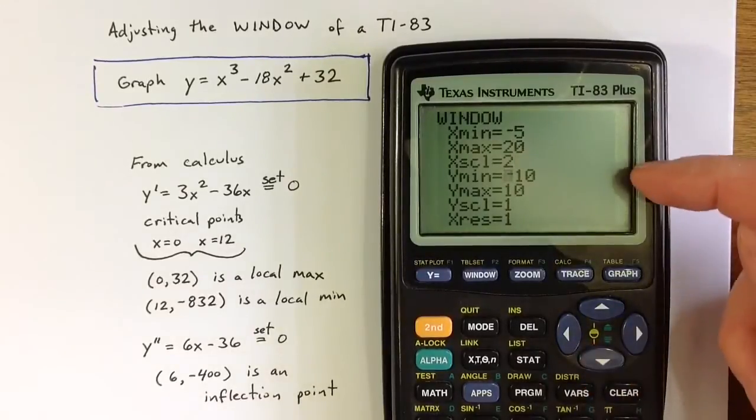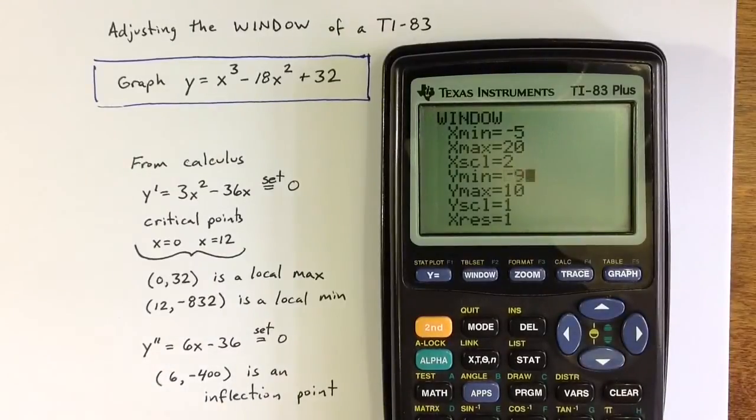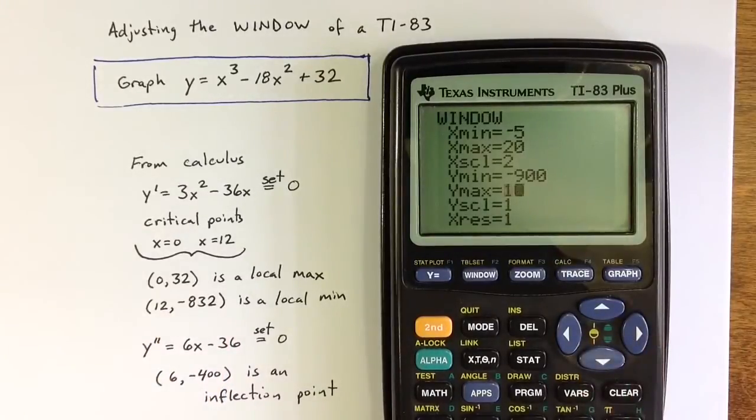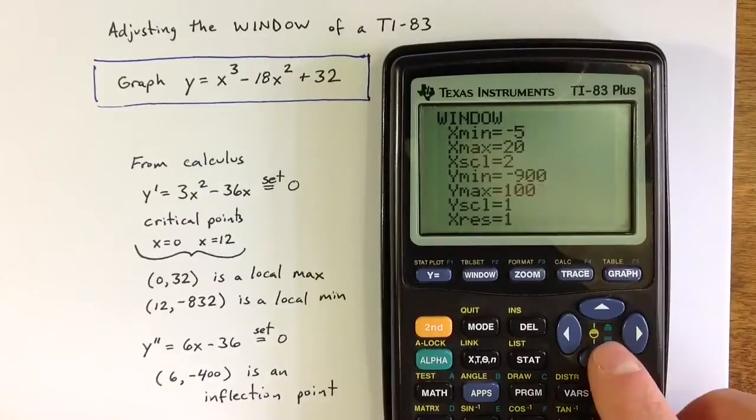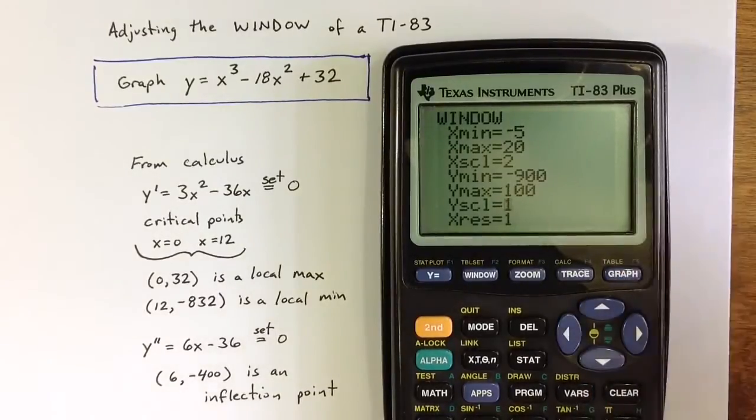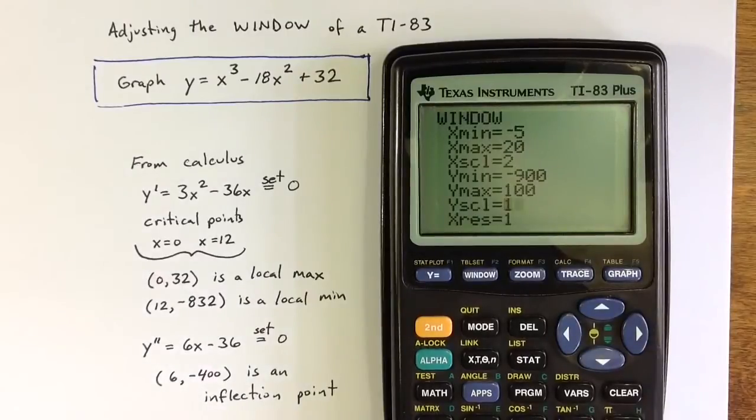For the y minimum, let's maybe go down to negative 900, a little bit below the local minimum, and up to positive 100. And here it's definitely important. I don't want to crowd the y-axis with lots of little tick marks, so I'm going to change the y scale to maybe count by 100 instead of by 1.